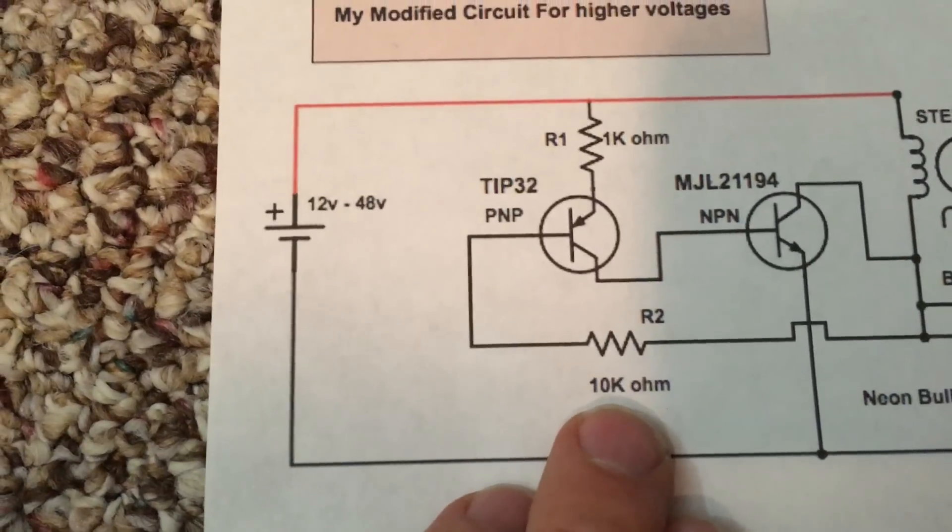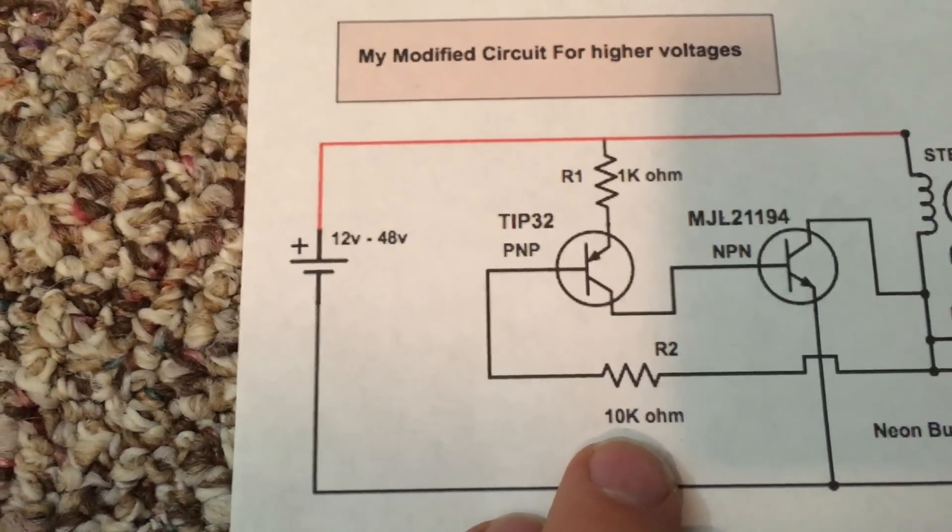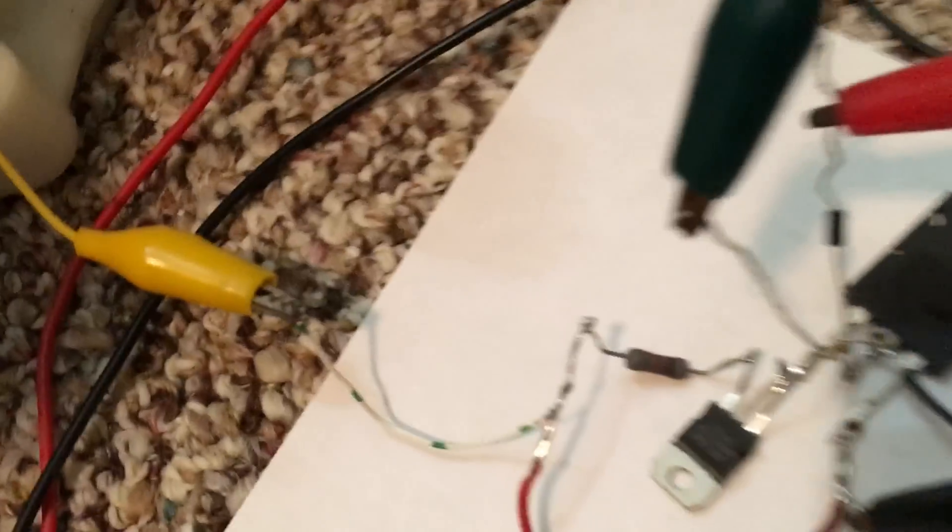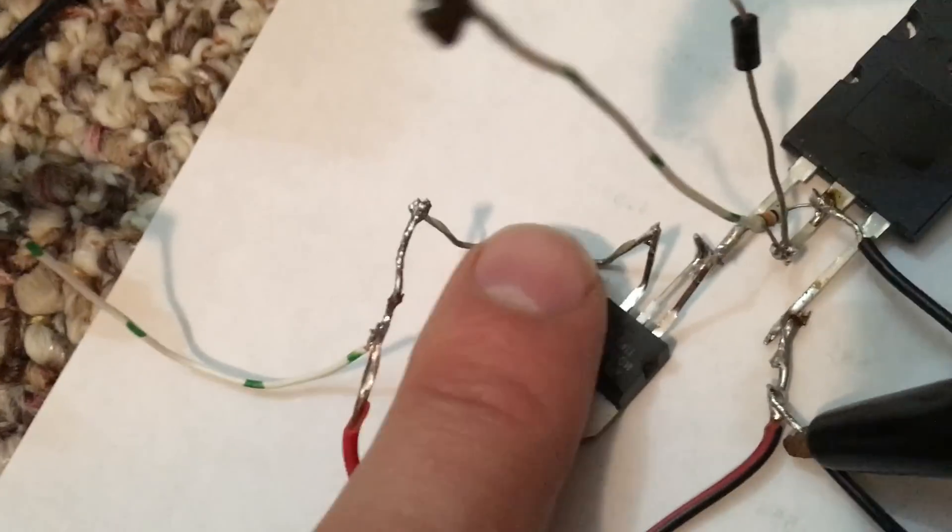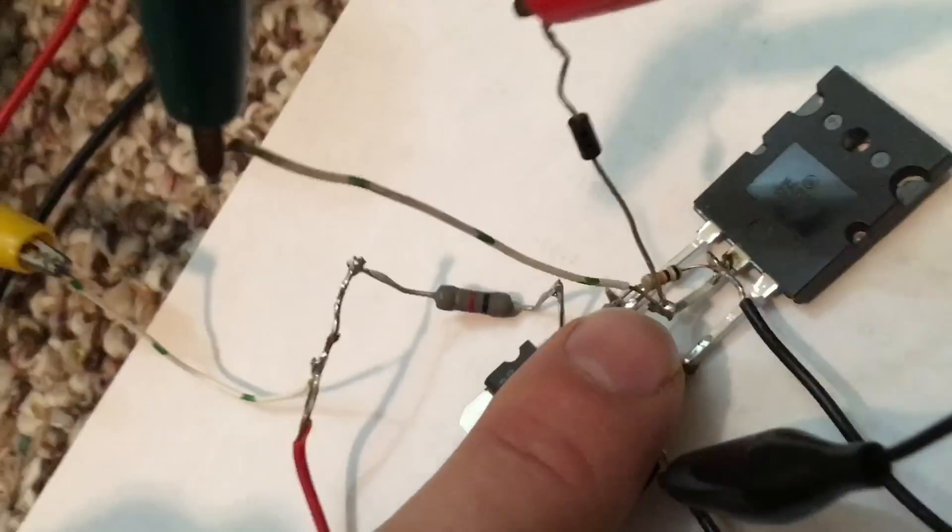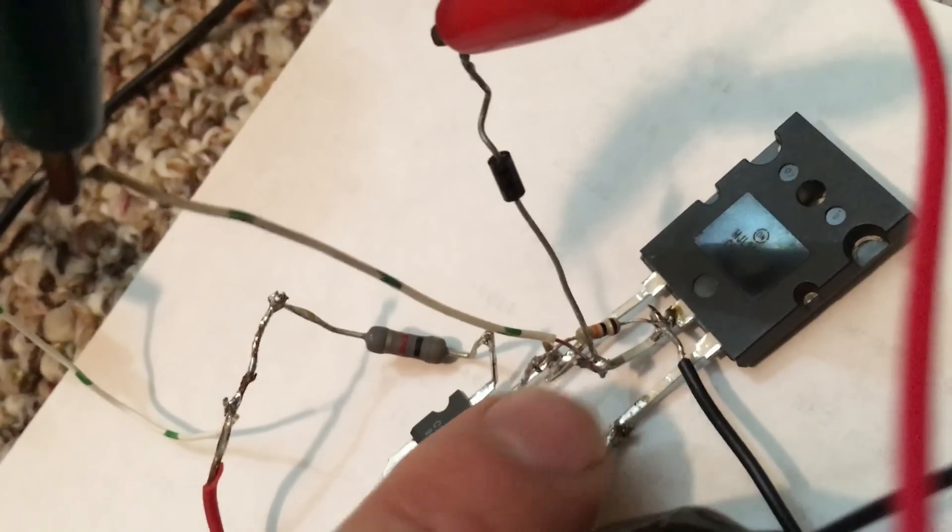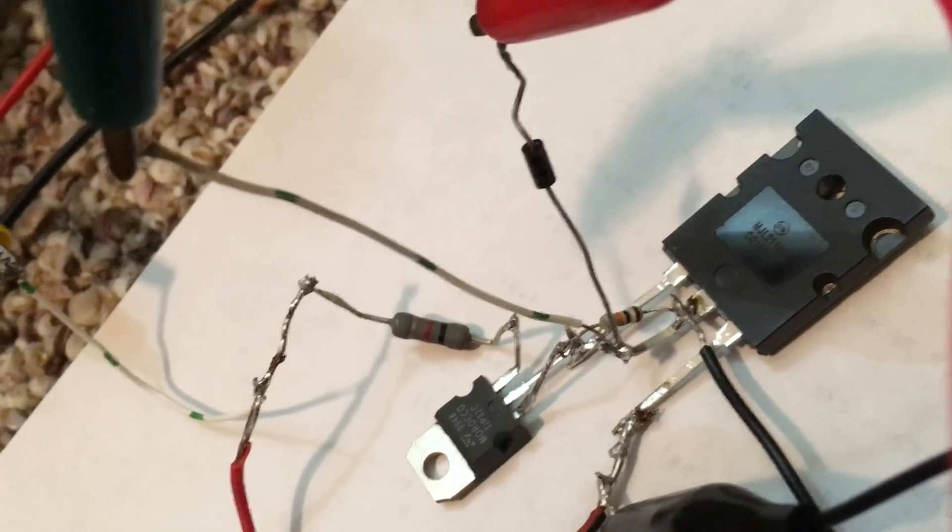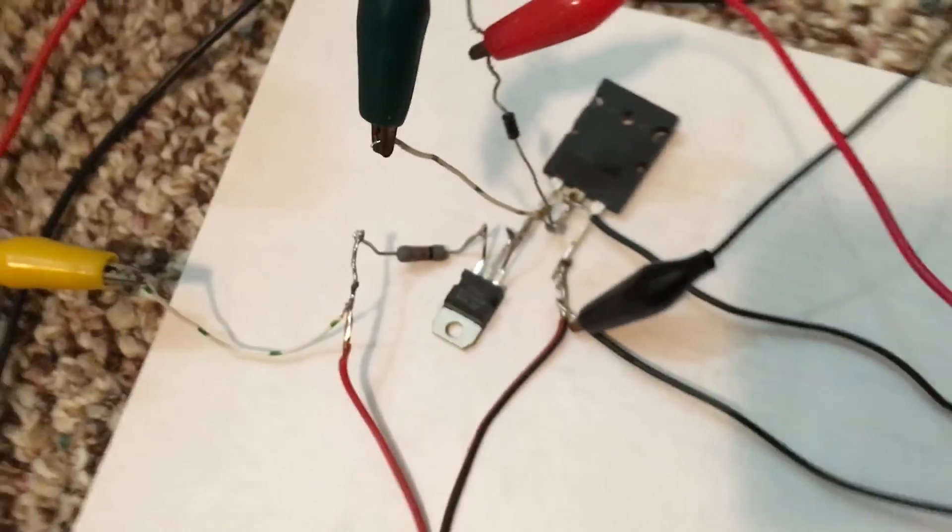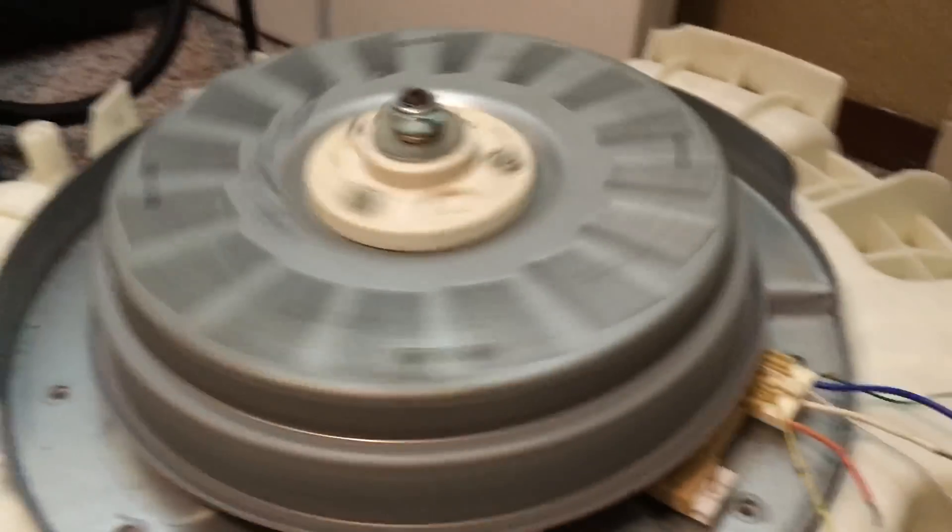So that's just a 1k ohm resistor, and then the other one is coming off as a 10k, so they're identical. There's my 1k, and then there's my 10k. Real simple little circuit and I'm really happy with it.